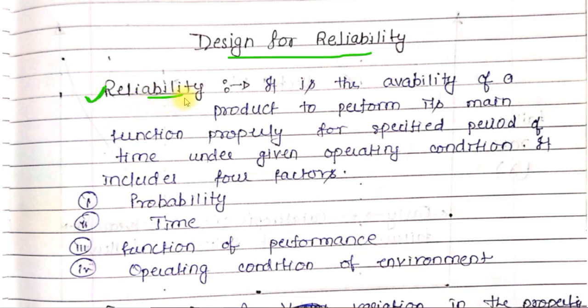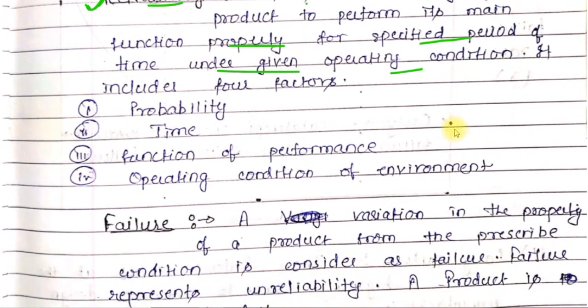Reliability is the availability of a product to perform its main function properly for a specified period of time under given operating conditions. This means if you purchase any product, it should work properly for the purpose and function it was intended, maintaining the desired output in the environment and conditions for which the product was manufactured.